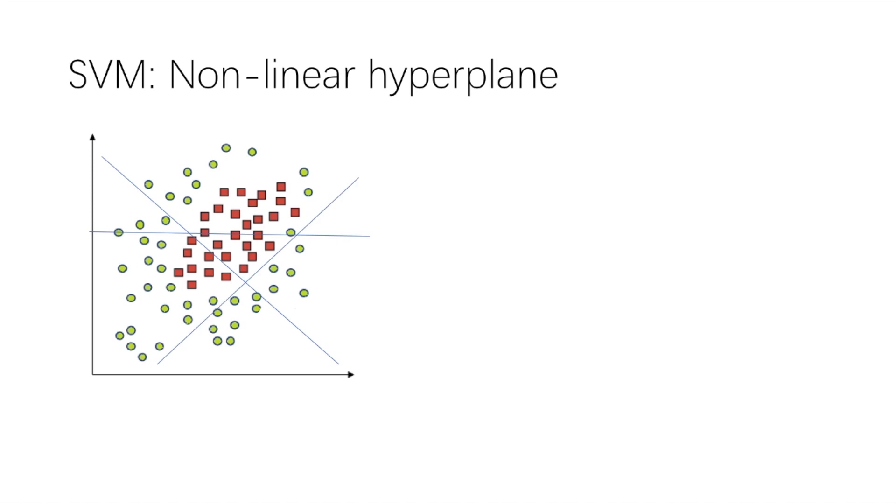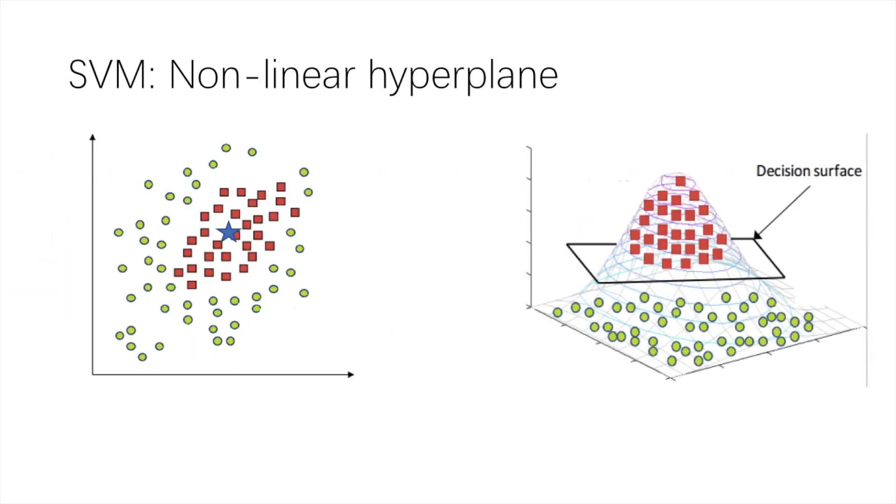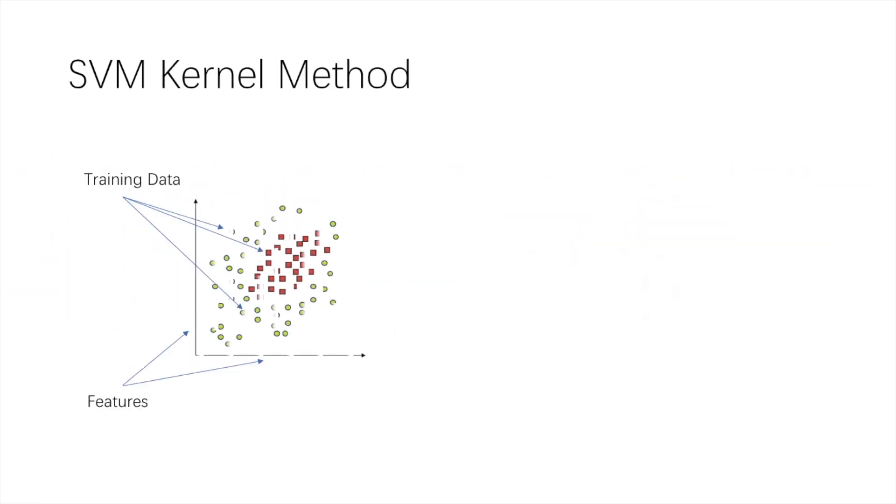What if the data set looks like this? It can't be separated linearly. But we can still handle it. If we calculate the distance from each point to the center, we create a new feature which helps us separate the data set perfectly. The function to create new features from the original ones is called kernel.